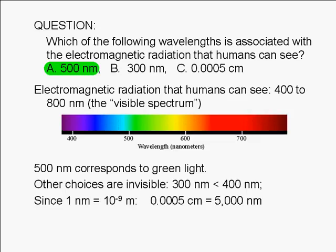The other choices given here are not visible to us. 300 nanometers is less than 400 nanometers. It's in what we call the ultraviolet or UV region of the electromagnetic spectrum.